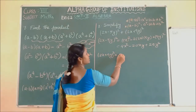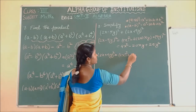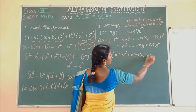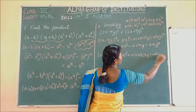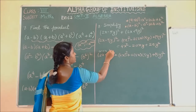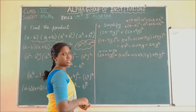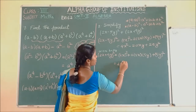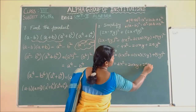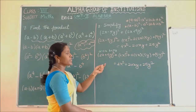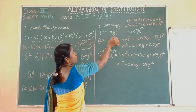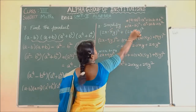Expanding 2X minus 5Y whole square gives 4X square minus 20XY plus 25Y square. Similarly expanding 2X plus 5Y whole square using A plus B whole square equals A square plus 2AB plus B square gives 4X square plus 20XY plus 25Y square.